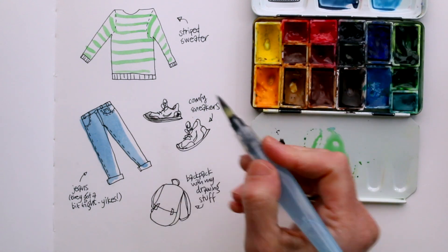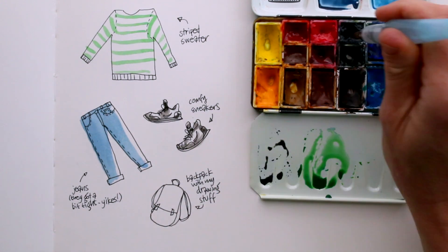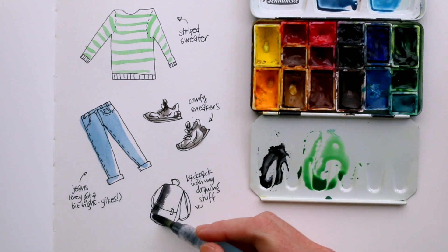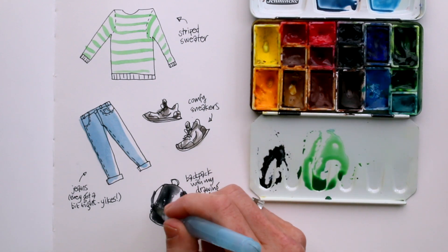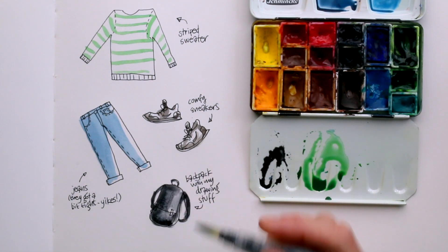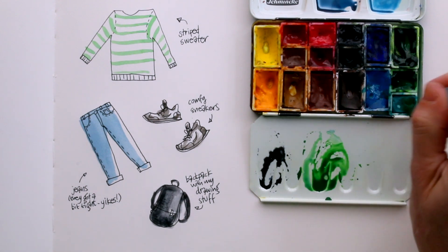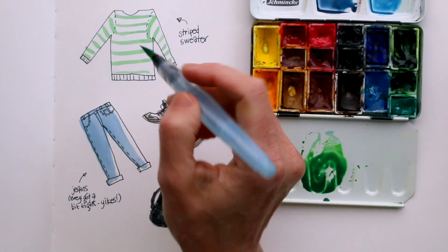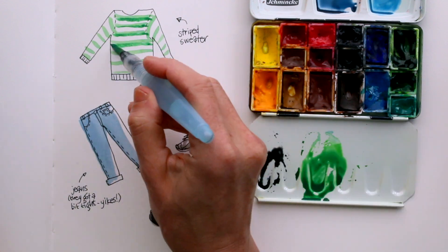And I'll add a little bit of shading to those white sneakers. And my backpack is black, so I'll mix Van Dyke brown and indigo for a nice dark grey. Because I don't have black in my color palette, and this works just as well.